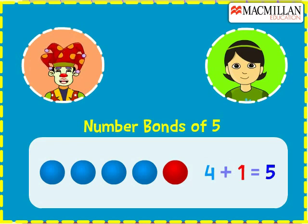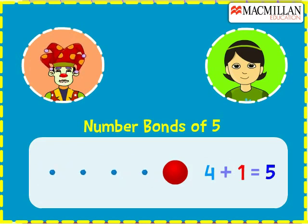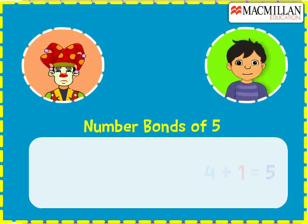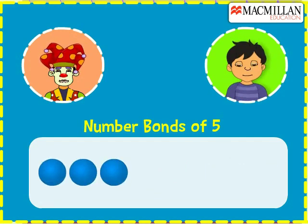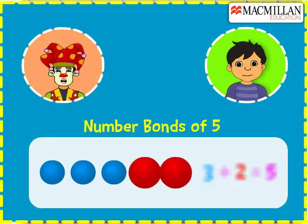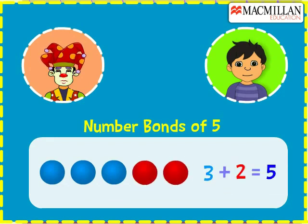That means we can add four blue balls with one red ball to get five balls. You have three blue balls and two red balls.